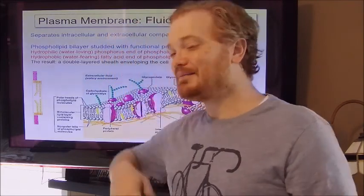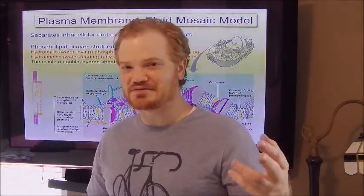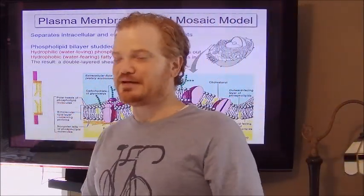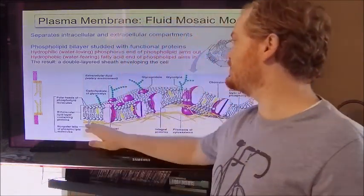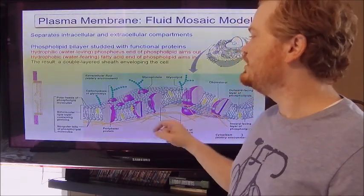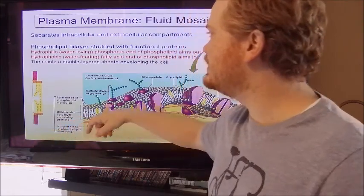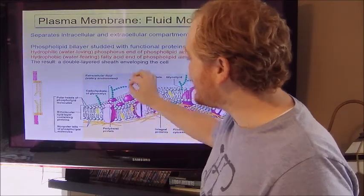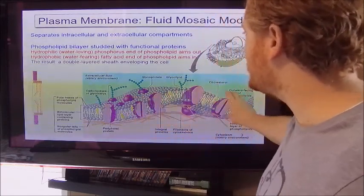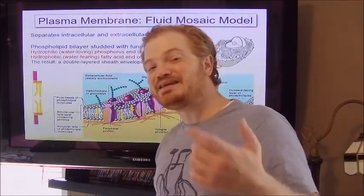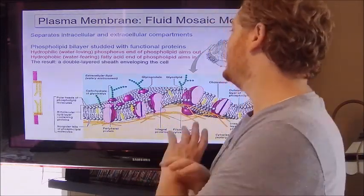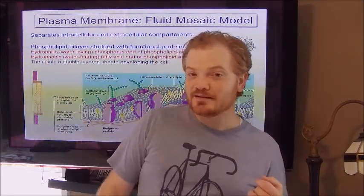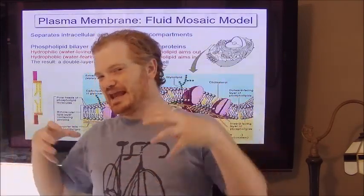All right, plasma membranes. The first thing I need to get across to you is the concept of the fluid mosaic model of cell membrane structure. When we say that your cell membranes are a fluid mosaic, you know that your cell membranes contain a bunch of phospholipids. You know that those phospholipids have a hydrophobic region and a hydrophilic region. The hydrophilic region are the heads here and there, and then the hydrophobic region is the tail portion here. You know at this stage that your cell membranes have more than just phospholipids, that there are proteins and all sorts of things associated with cell membranes.